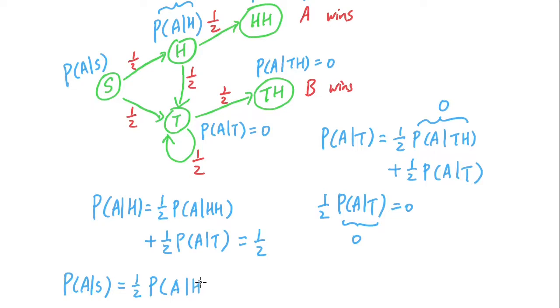That's one half times one half plus one half times zero, equal to one fourth. So this is the solution.